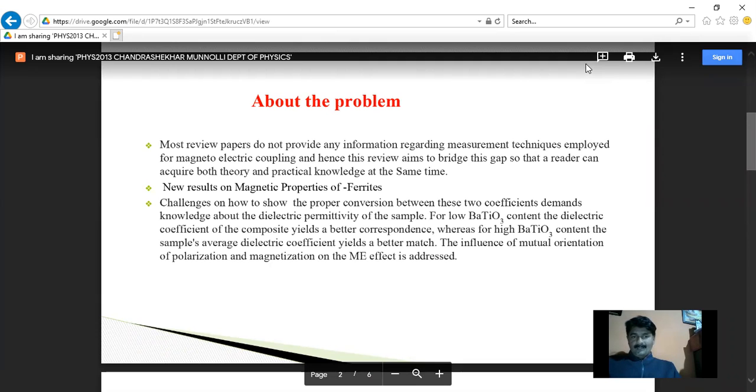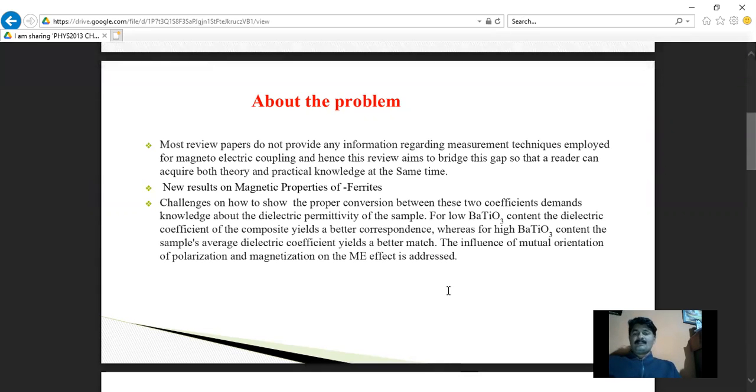Second, only new results on magnetic properties of ferrites. And similarly another challenge I have faced is how to show the proper conversion between the two coefficients, which demands knowledge about the dielectric permittivity of the sample. For low barium titanate content, the dielectric coefficient of the composite yields a better correspondence, whereas for high barium titanate content, the sample's average dielectric coefficients yields a better match. The influence of mutual orientation of polarization and magnetization on the magnetoelectric effect is addressed.